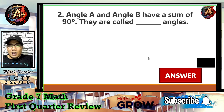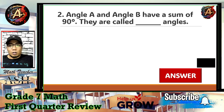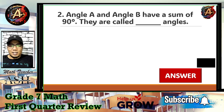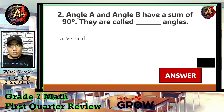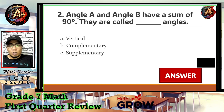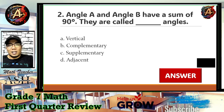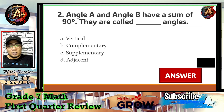Question number two: Angle A and Angle B have a sum of 90 degrees. They are called blank angles. Is it A) vertical, B) complementary, C) supplementary, or D) adjacent?